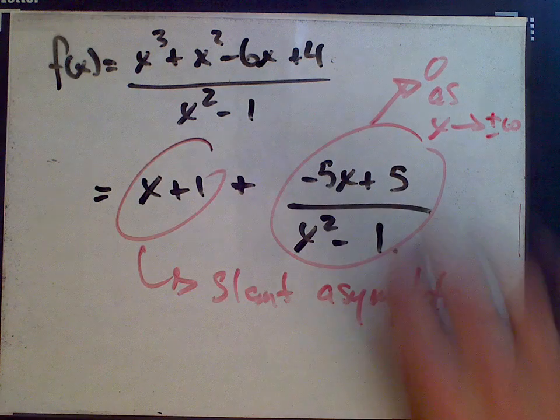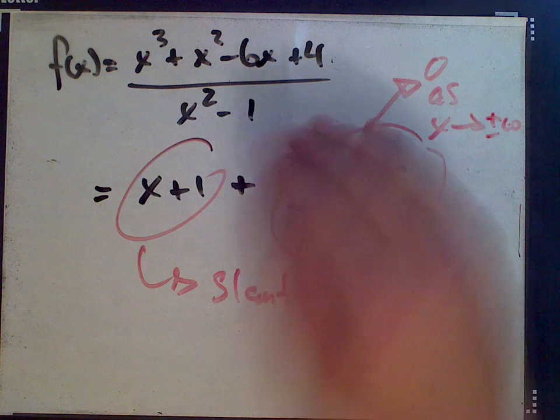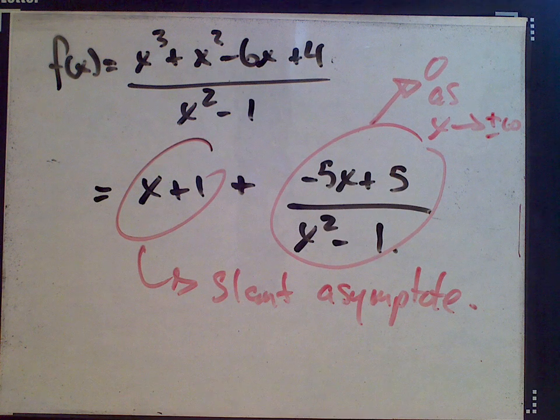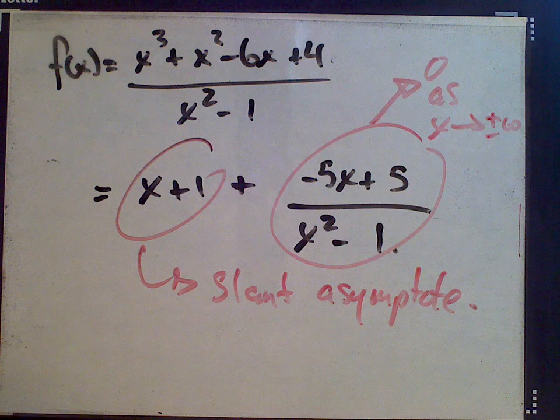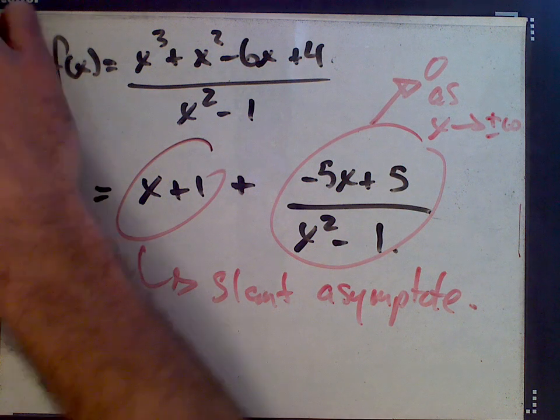So as x gets big, this term contributes less and less. So the function tends towards x plus 1. That's the solution and a little bit more for a question.